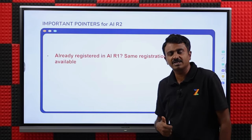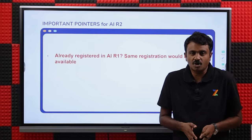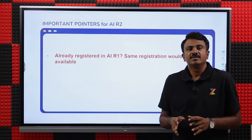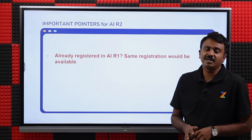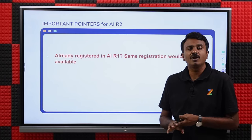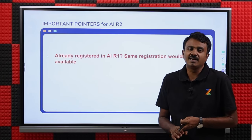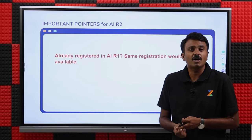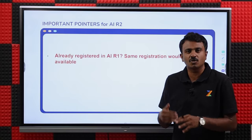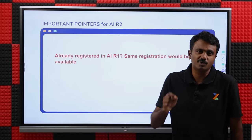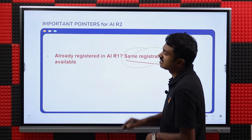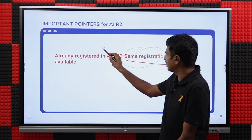The biggest query we always receive is: I registered in All India Round 1 — should I register again? You don't need to register at all. If you registered in All India Round 1 and were not allotted, or were allotted and did not join (free exit), or joined and resigned within the timeline (which was till 19th 11 AM), or were allotted and opted for upgradation, or ended up taking a state seat — no fresh registration is needed. Same registration applies.